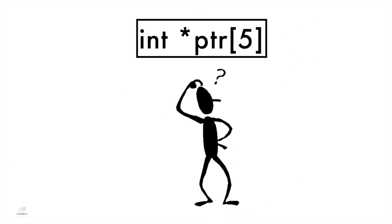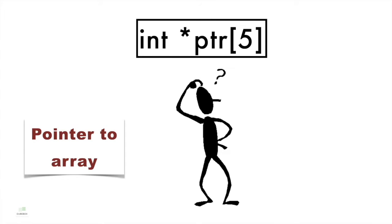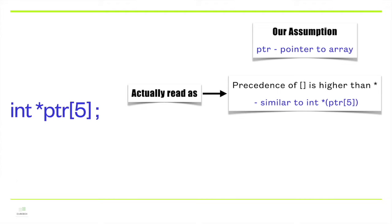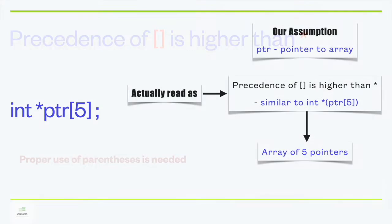Taking an example: `int *ptr[5]` — is it a pointer to an array or an array of pointers? While writing this code, we assume it is a pointer which will point to some array, but it is read differently by the compiler. It is due to the precedence issue: precedence of brackets is higher than the star operator, so it leads to an array of 5 pointers.